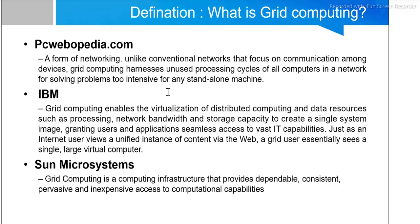Grid computing is helpful for solving problems too intensive for any standalone machine — it creates a network to solve hard problems. Similarly, IBM has defined grid computing as enabling virtualization of distributed computing and data resources such as processing, network bandwidth, and storage capacity, to create a single system image.